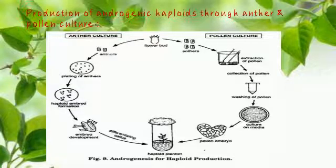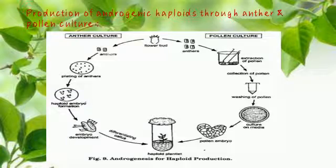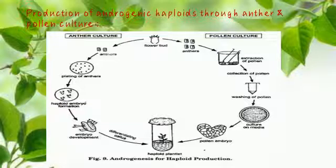For pollen culture: from the flower bud, anthers are removed and pollen is extracted and collected. The pollen is washed, then cultured on media. A pollen embryo is formed, which is then developed into a haploid plant.